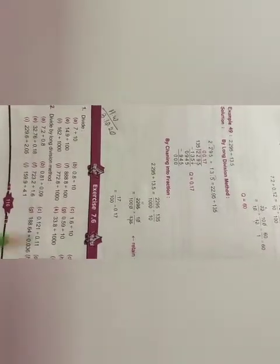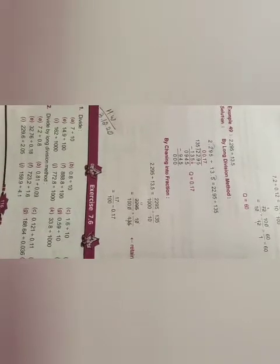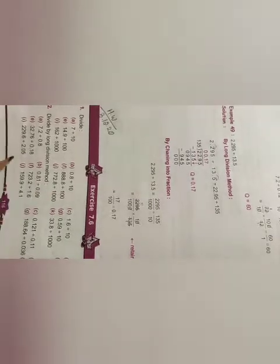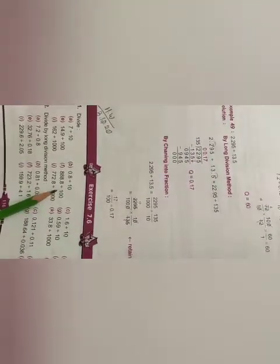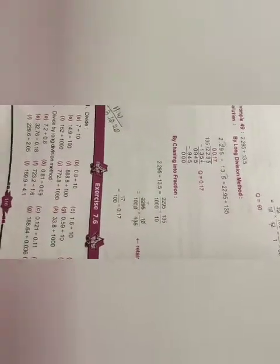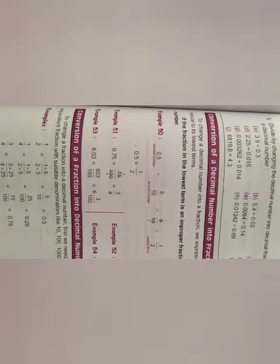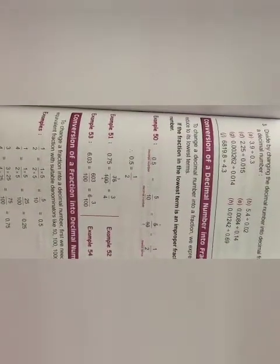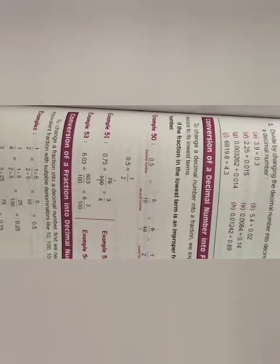Then comes exercise 7.6. Number one divide. You follow the example and do the division. Number two divide by long division method. Here children, only you apply long division method. But here any one method, whatever you think is easy, that method you can apply and find out the division. Then comes number three. Divide by changing the decimal number into decimal fraction and express the quotient as the decimal number. Here children, you apply the second method by changing into fraction. After that, you have to change the result into a decimal number. So up to number three, your homework. You complete exercise 7.6 in your copy. Thank you.